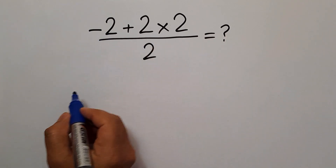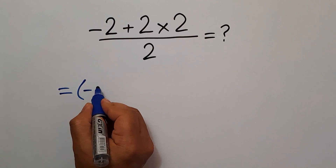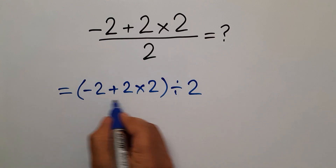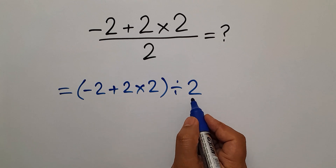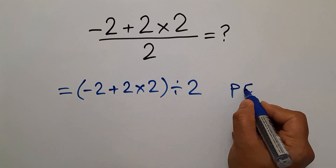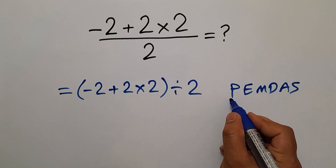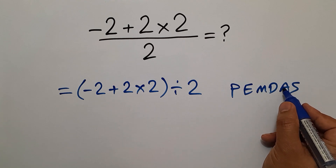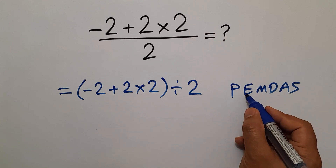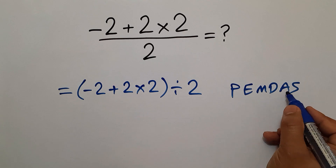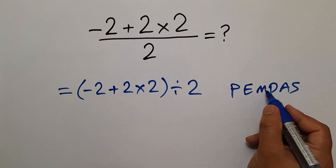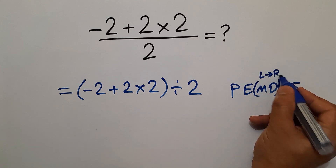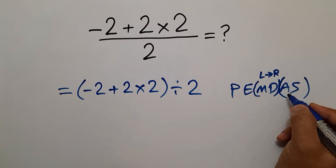Now, our correct path. The fraction can be written as parentheses negative 2 plus 2 times 2, divided by 2. According to the order of operations, which is PEMDAS: P stands for parentheses, E for exponents, M and D for multiplication and division, and A and S for addition and subtraction. We first do parentheses, then exponents, then multiplication and division, and finally addition and subtraction. Remember that multiplication and division have equal priority and we work from left to right. The same applies to addition and subtraction.